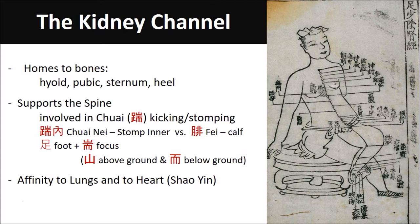The second branch goes from the kidneys upward, piercing the liver and the diaphragm, entering the lung center, following the larynx and the throat, and pressing the root of the tongue. A third branch comes out of the lungs to network the heart and pour into the chest center.